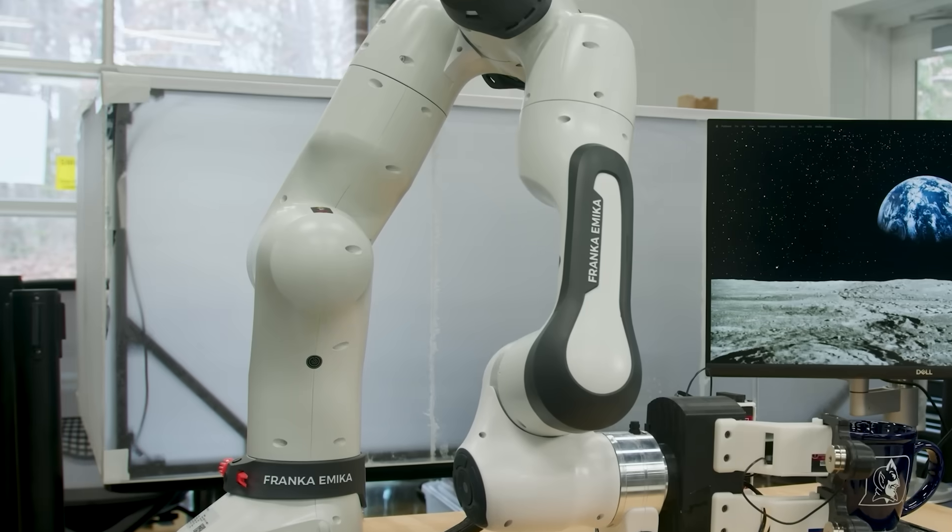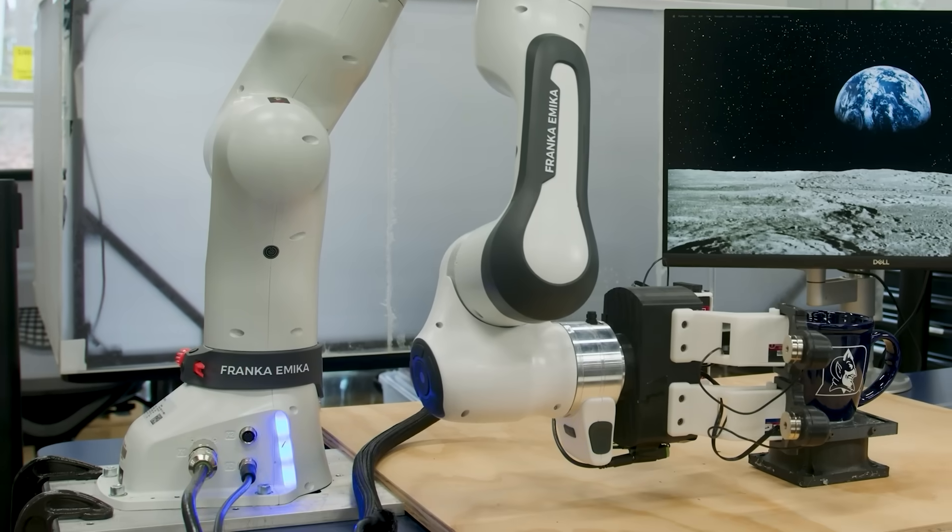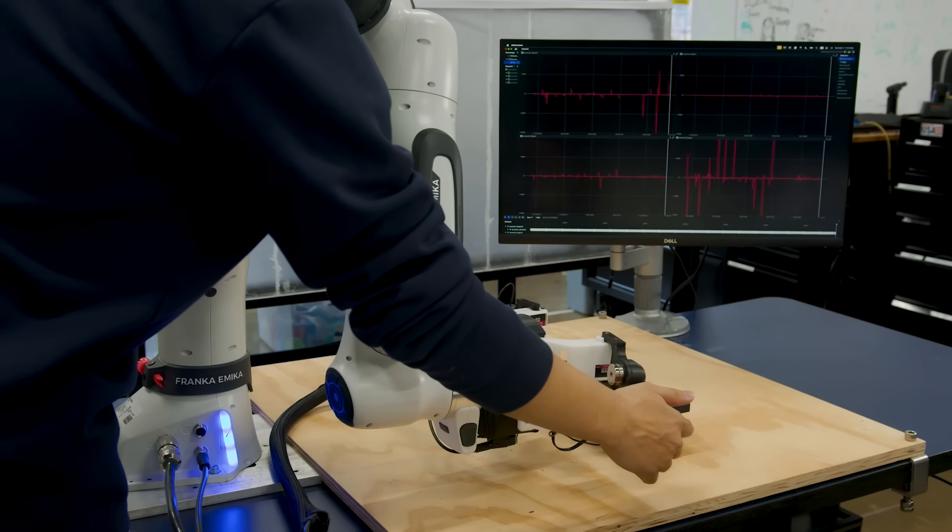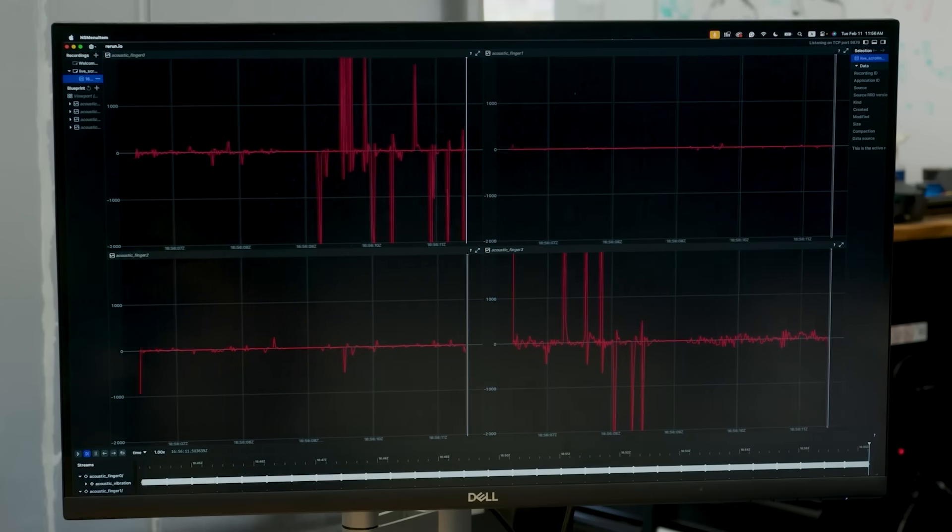The main components of Sonic Sense is the body frame of the robot gripper, the contact microphones embedded inside each of the fingers, and the integrated AI system that perceives the vibration signals.